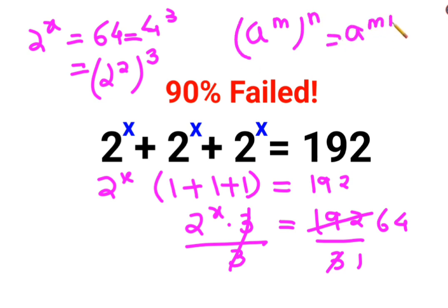And this is 2 raised to x, so this becomes 2 raised to x equals 2 raised to 6. Therefore, the value of x equals 6.